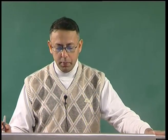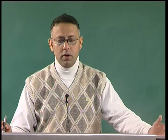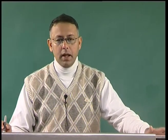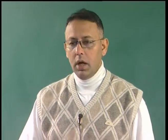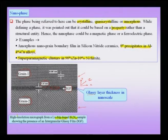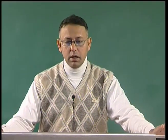The nano phase could also be based on a property, like in the case of a ferroelectric or ferromagnetic material. As we shall see later, this phase can be nano in one dimension, two dimensions, or three dimensions. The example of three-dimensionally confined clusters are the super paramagnetic clusters in 10 percent nickel ferrite. Some details of phases like super paramagnetic phases and the amorphous grain boundary will be considered in detail later.